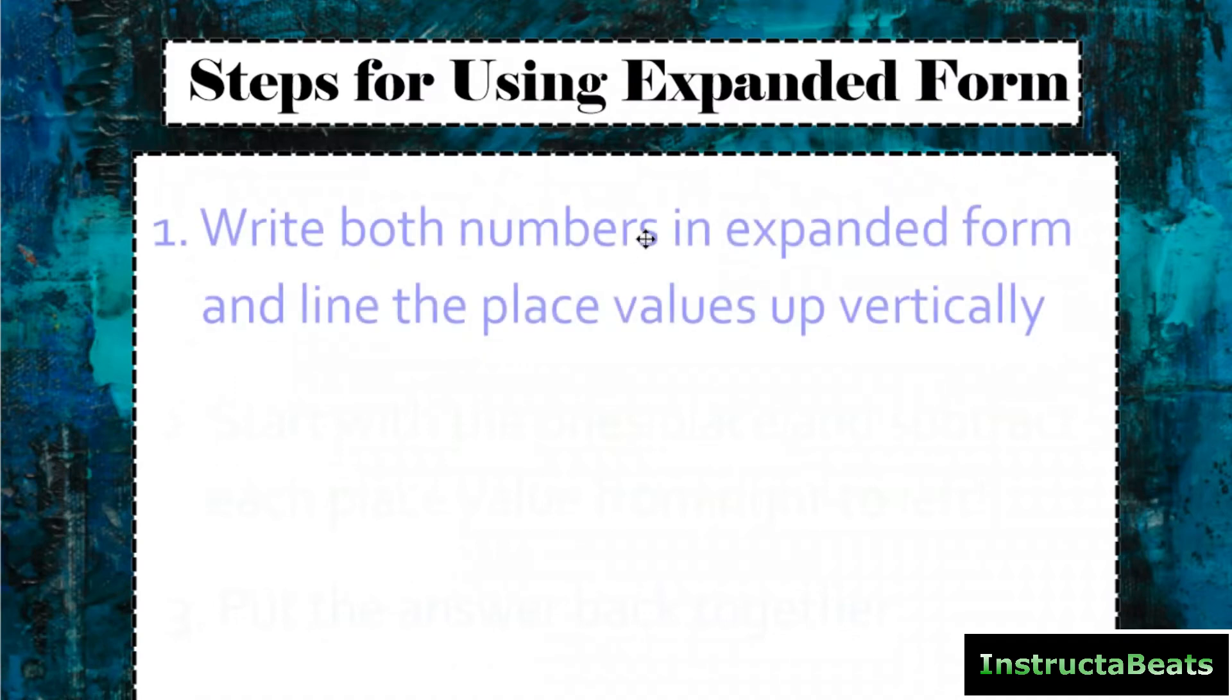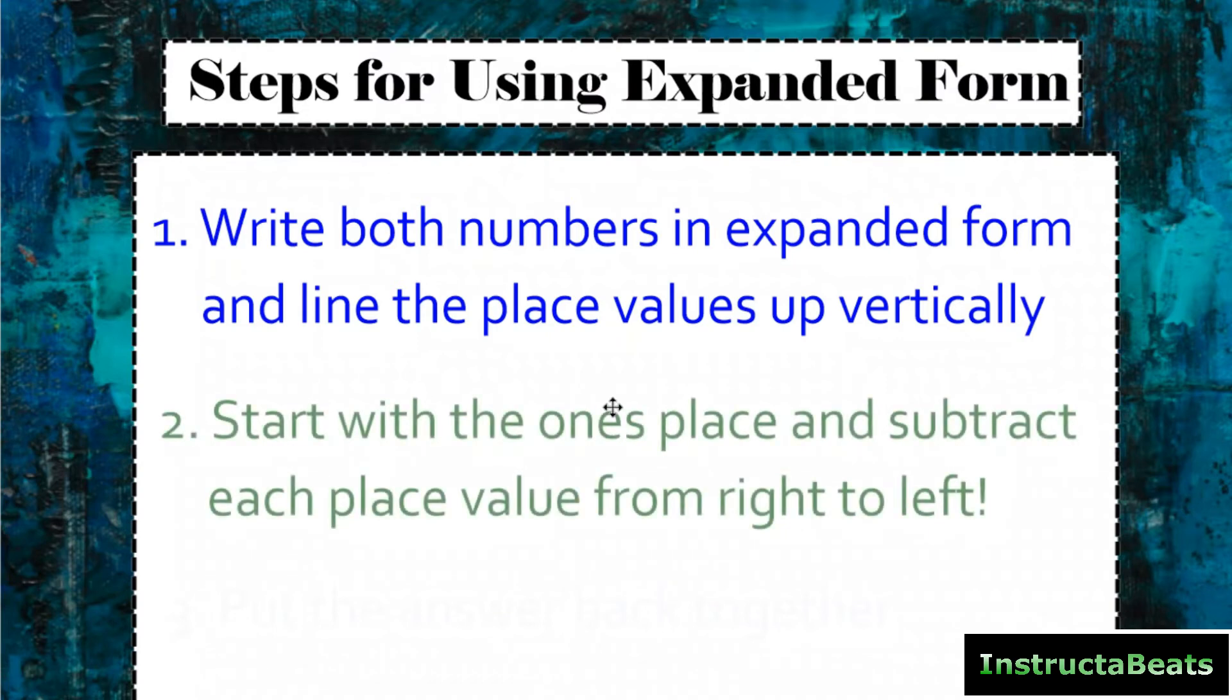So now we want to name the steps that I just did for expanded form. We want to have these down in your notes, which you can find in the description of this video. You can make a copy of them, print them out, or just take them online. So the first thing we did when we're subtracting using expanded form is we're going to write both numbers in expanded form and line the place values up vertically. Just like we did with our 100s, 10s, and 1s chart. When we did the expanded form, we made sure that our 100s places were lined up, our 10s places were lined up, and the digits from the 1s places were lined up. Step number two, we're going to start with the 1s place and subtract each digit going from right to left. So we start with the 1s place, and then we go to the 10s place, and then the 100s place.